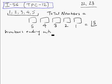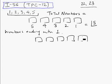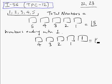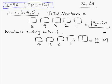Now, if we want to find numbers ending with a particular digit, say 1 — numbers that end with 1 — we fix 1 in the units box. Then we have four options for the next box, three for the next, two, and one. That gives us 4 factorial, which equals 24.